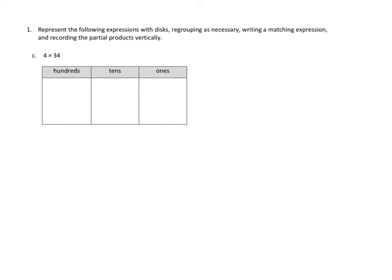Let's take a look at the expression. The expression is 4 times 34. The first thing we want to do is model this on our place value chart. So 34 — that's 3 tens and 4 ones. And I'm going to put that over on the right in our vertical model: 34. Now we're going to multiply 34 by 4.